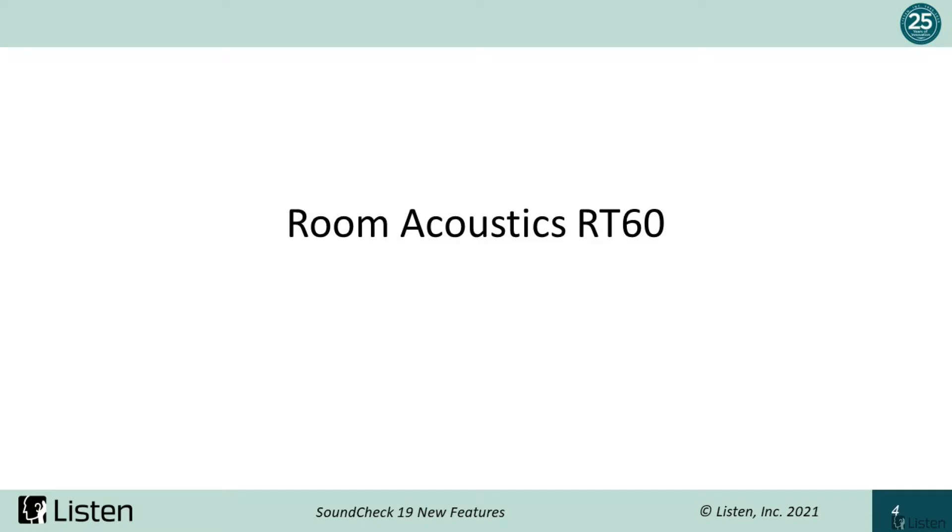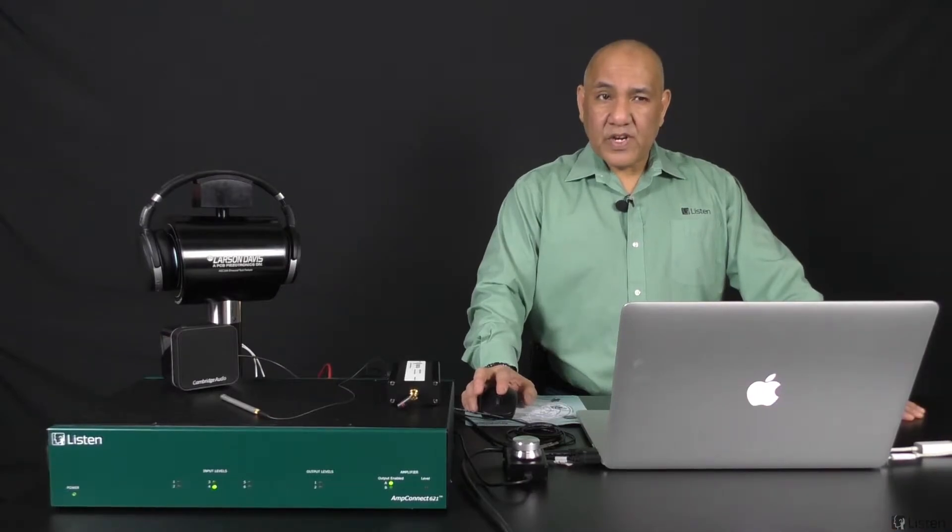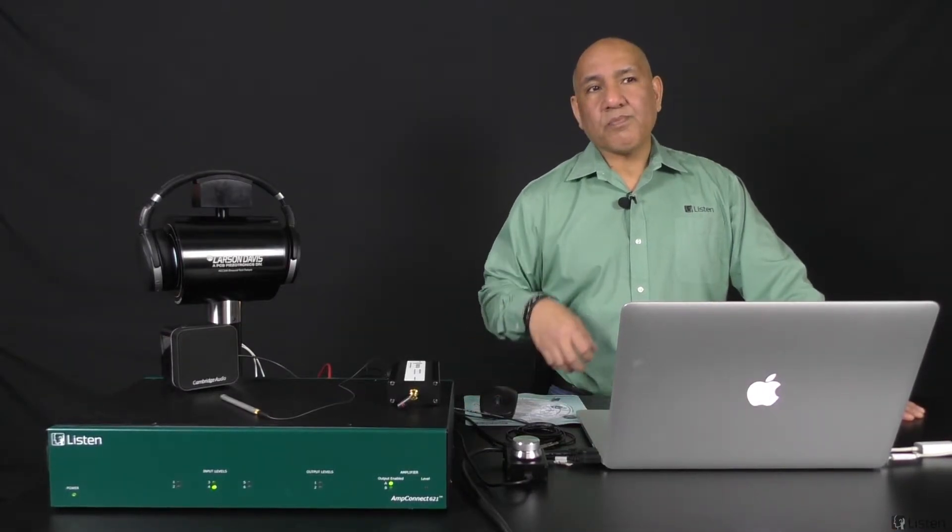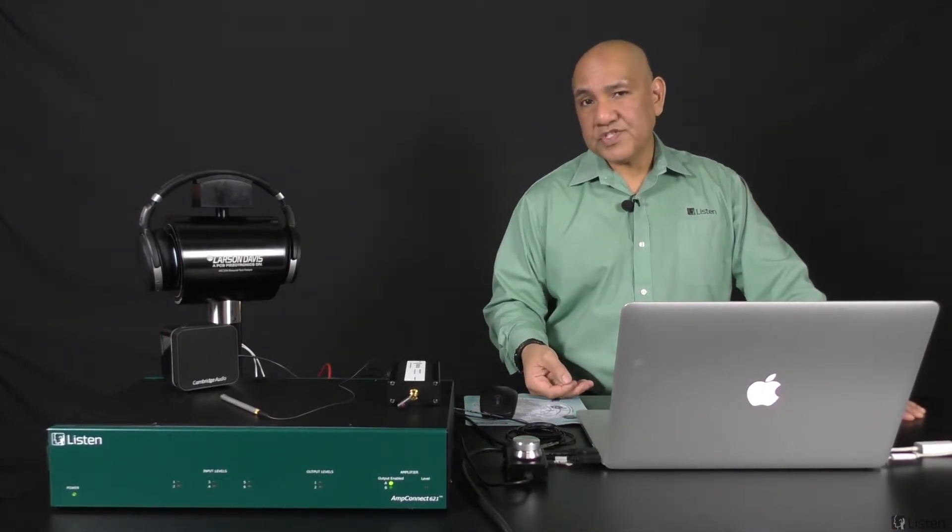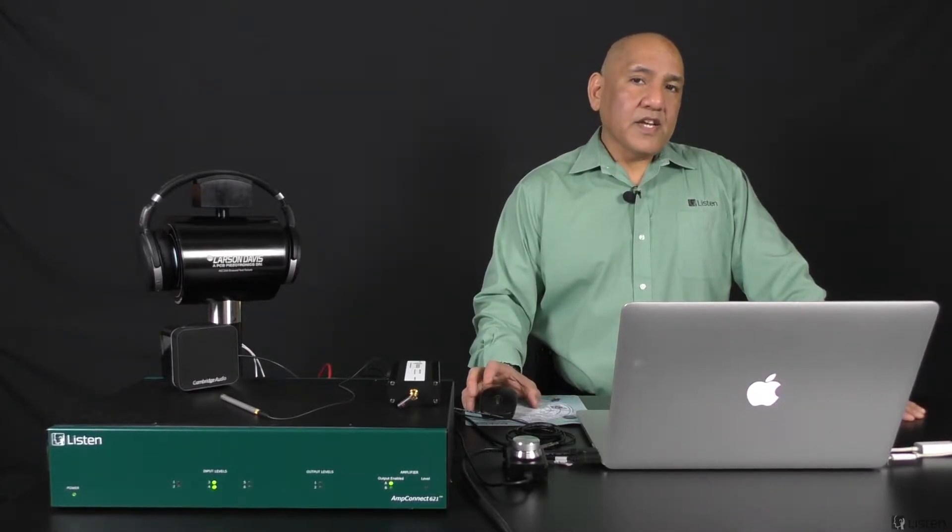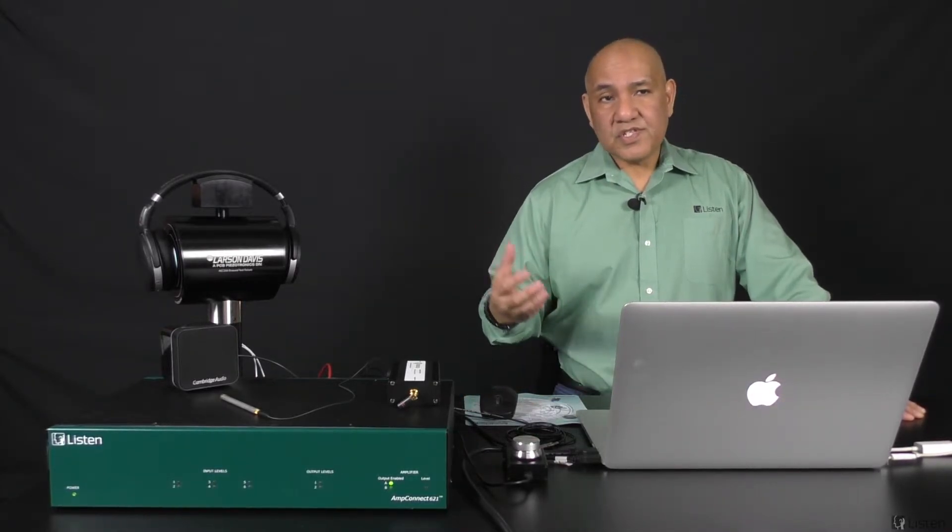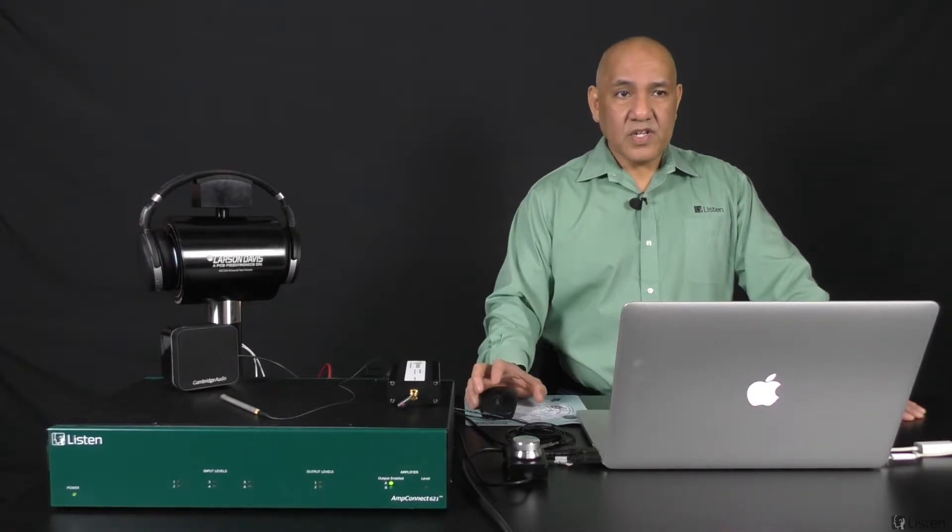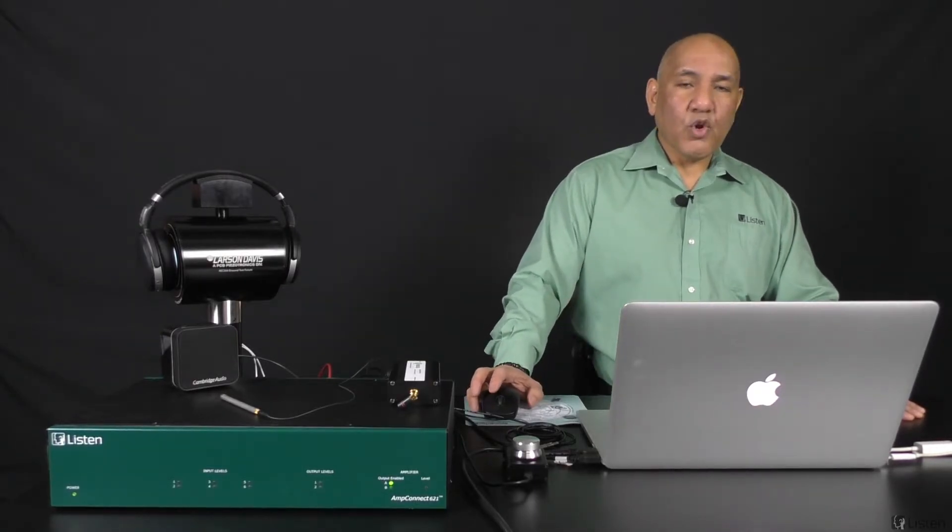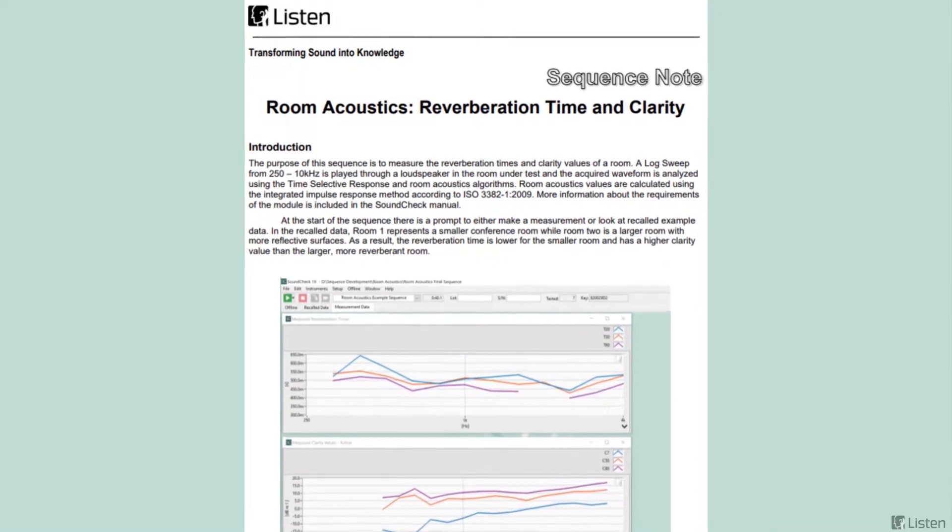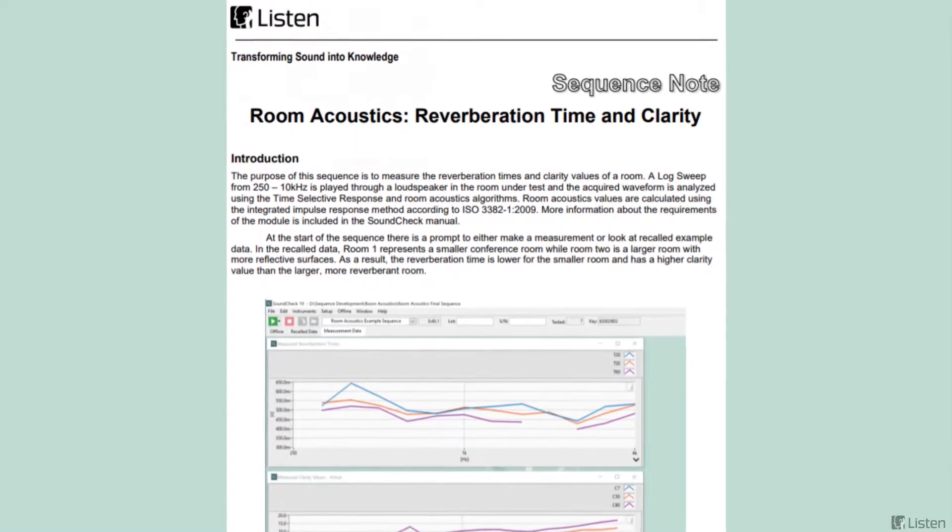Room Acoustics RT60 analysis has been added to Soundcheck 19. This is useful for characterizing how your device will perform or interact with the acoustics of a room. It can also help identify problems with acoustics in a room so it could be treated accordingly. For this demonstration, I'm going to use an installed demo sequence called Room Acoustics.